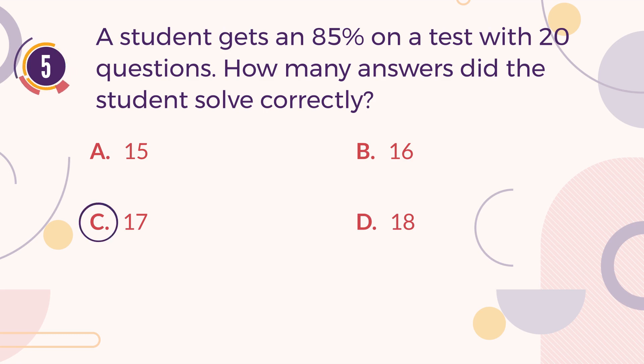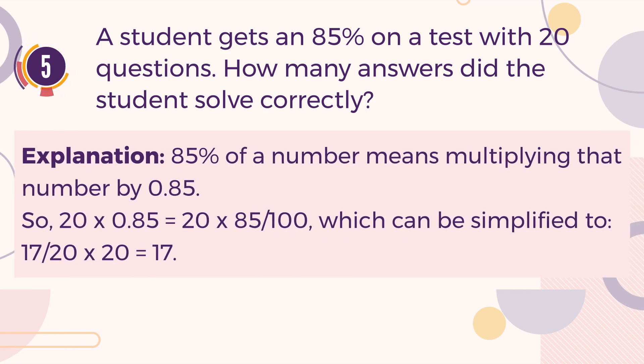The correct answer is C. 17. Explanation. 85% of a number means multiplying that number by 0.85. So, 20 multiplied by 0.85 equals 20 multiplied by 85/100, which can be simplified to 20 multiplied by 17/20. The final result is 17.